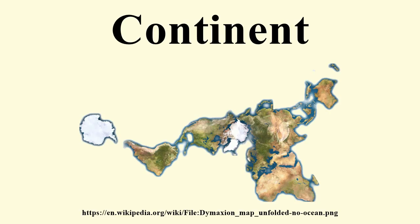Aside from the conventionally known continents, the scope and meaning of the term 'continent' varies. Supercontinents, largely in evidence earlier in the geological record, are landmasses that comprise more than one craton or continental core. These have included Laurasia, Gondwana, Vaalbara, Kenorland, Columbia, Rodinia, and Pangaea.